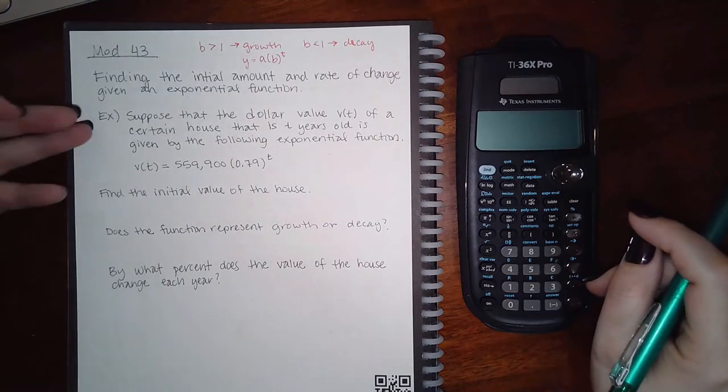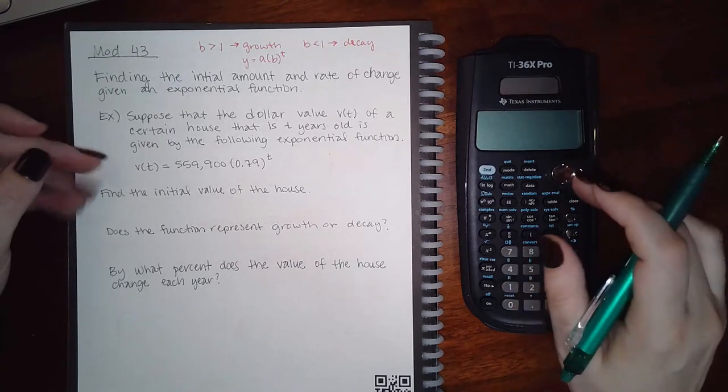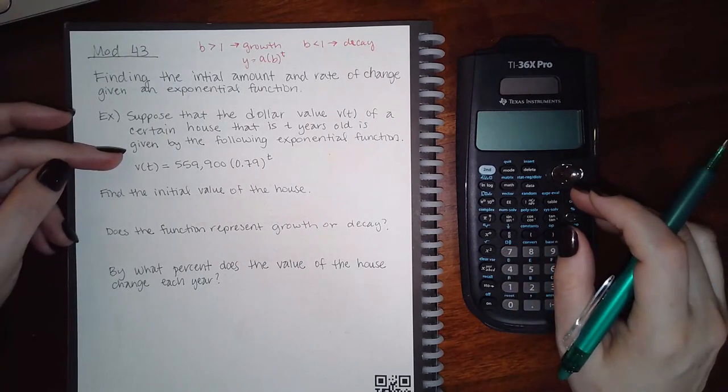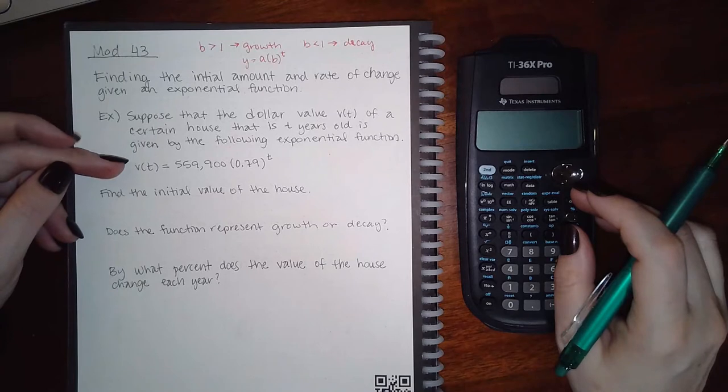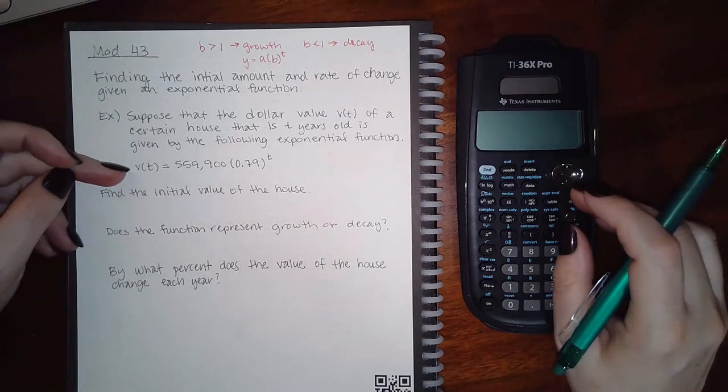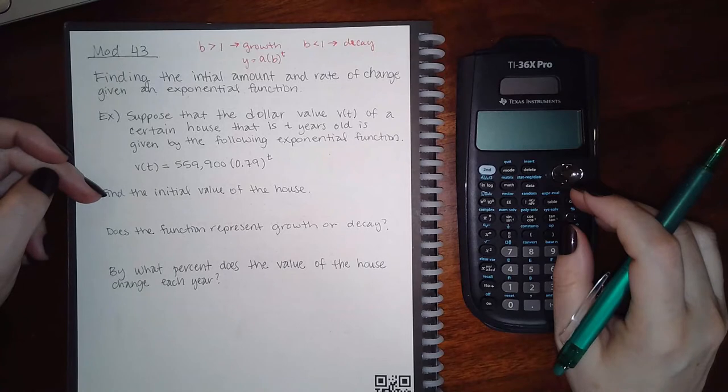Here's the example: Suppose that the dollar value v(t) of a certain house that is t years old is given by the following exponential function. Find the initial value of the house.